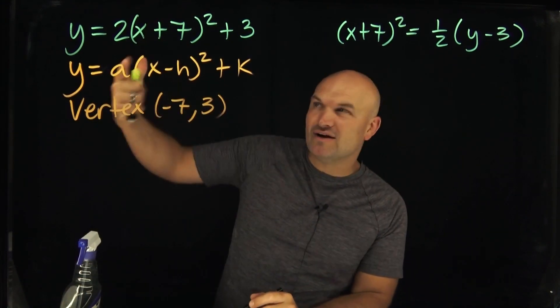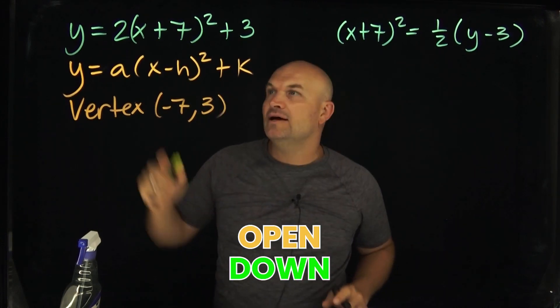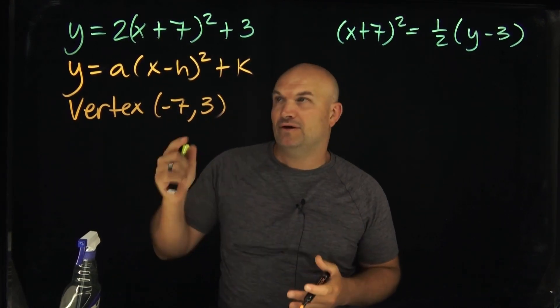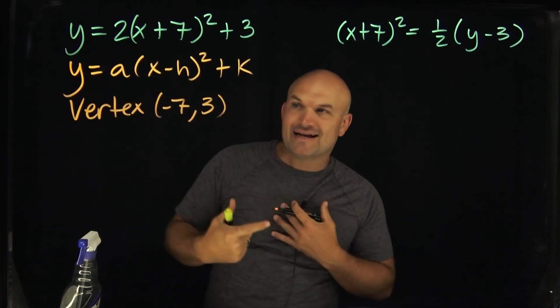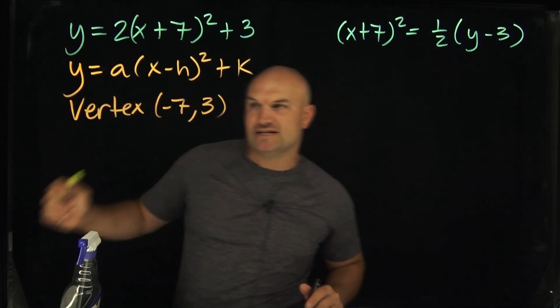And then whenever there's a coefficient in front, as long as it's positive, we know it's going to open up. If it's negative, it opens down. And then whatever that scalar number is, sometimes it can be a little bit difficult. 2 is not too bad though. We can just follow some points here from the left and from the right. I'm not going to be accurate. I'm just going to draw us a general form of this parabola here in vertex form.